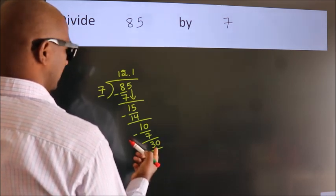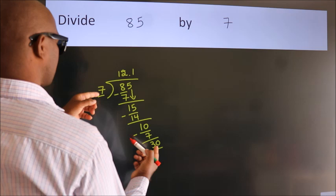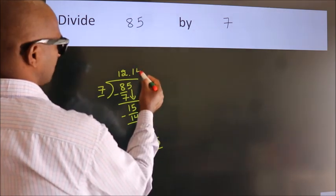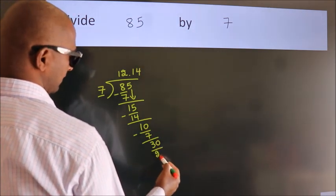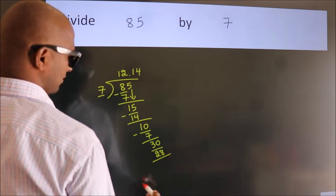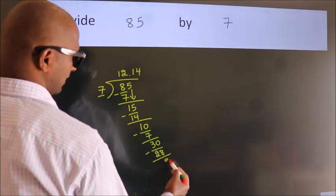A number close to 30 in the 7 table is 7 fours 28. Now we subtract. We get 2.